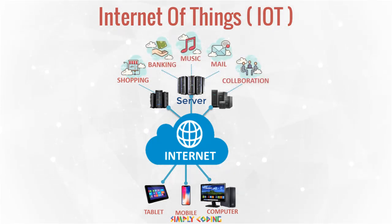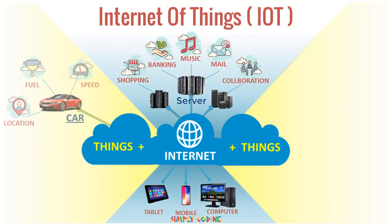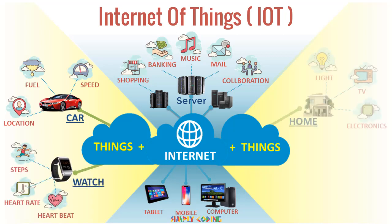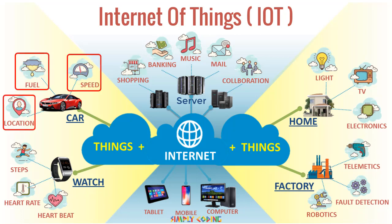The next step which everyone thought of was how about connecting other things we see around us to the Internet, like my car, watch, light, TV, machines. Once my car is connected to the Internet, we can track its fuel meter, speed level, and also track the location of the car.